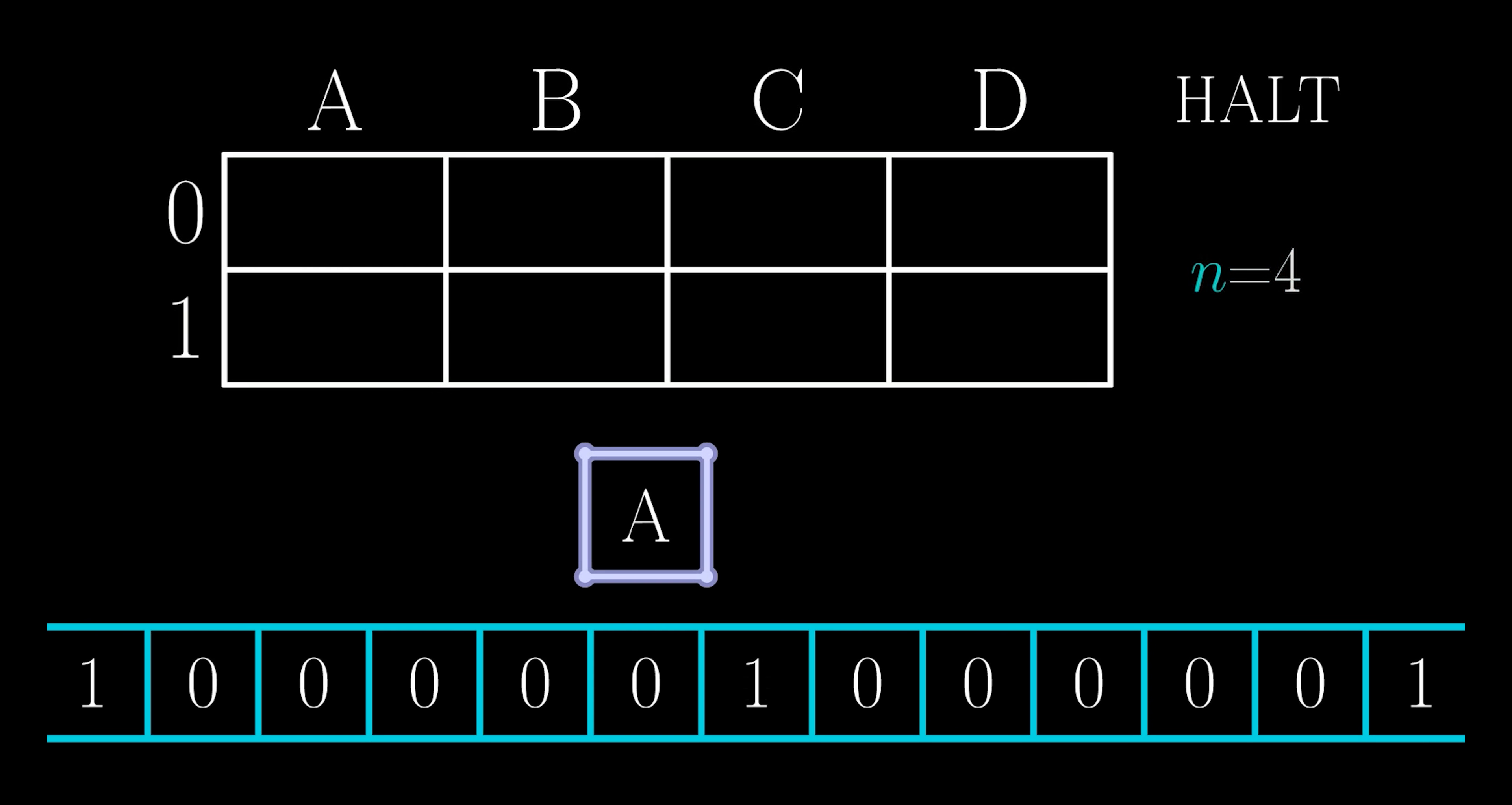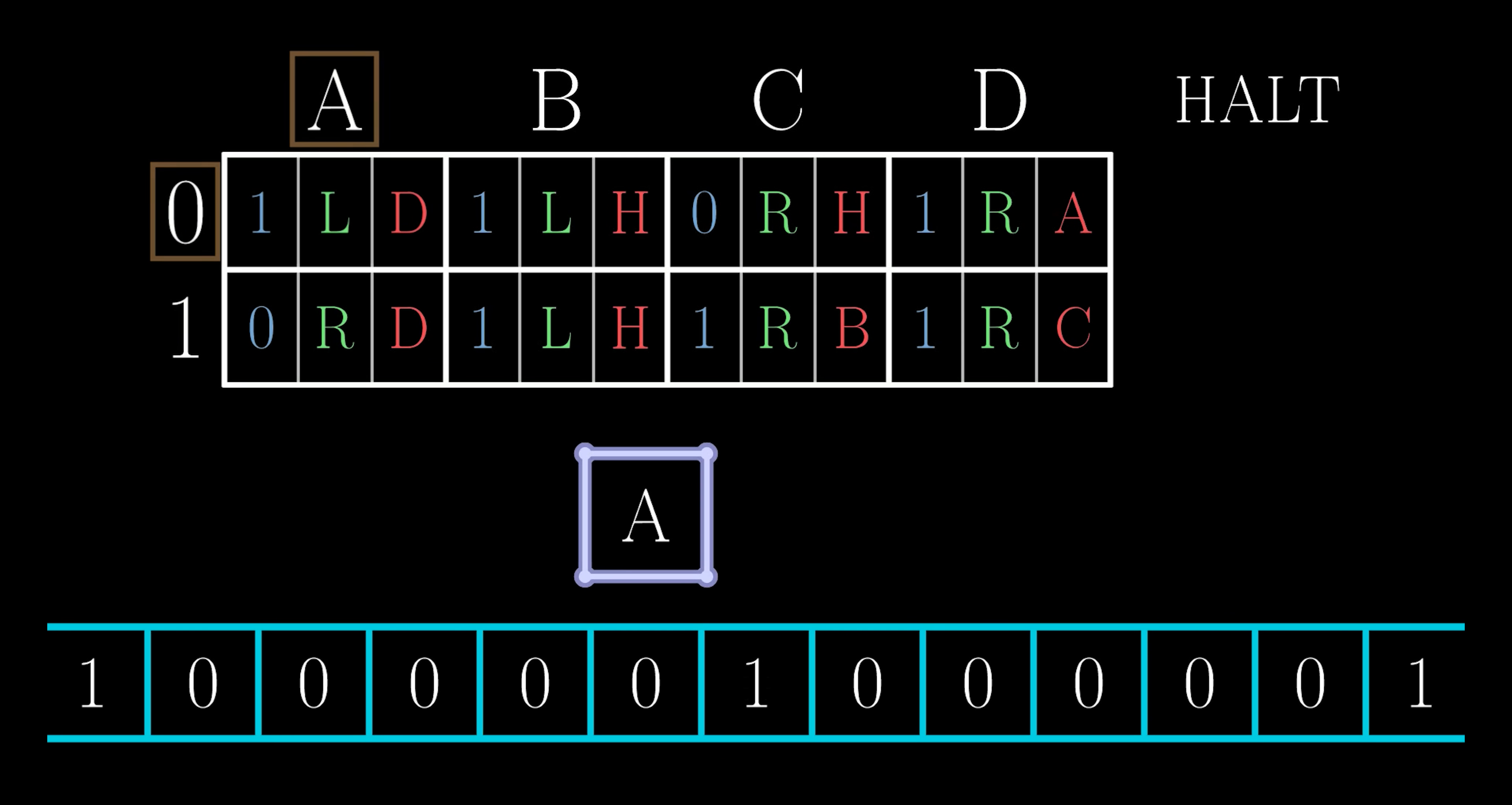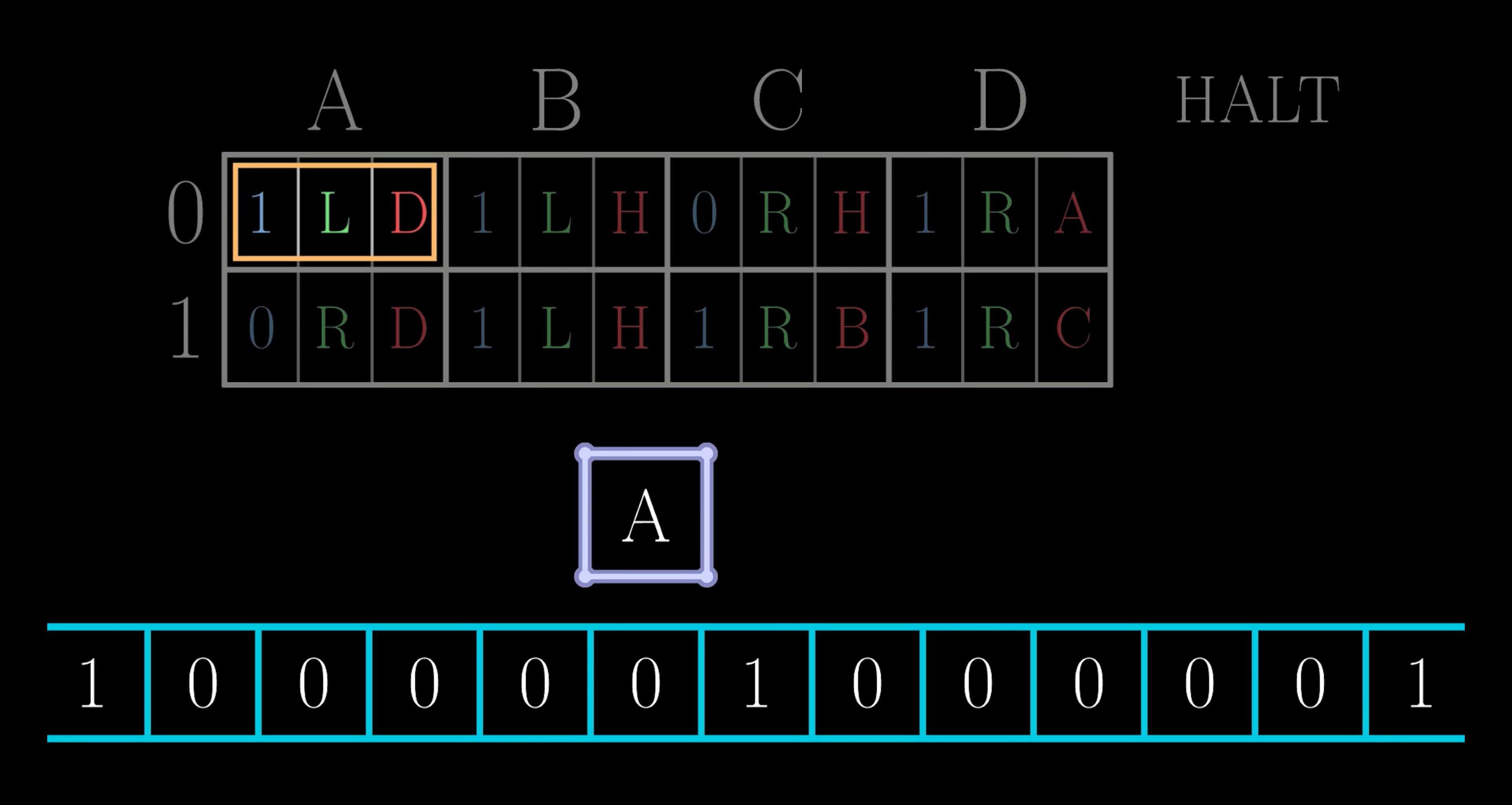Now, for every combination of the state and the value it reads, we have three actions to determine. The value to write, how to shift, and what state to transition into. For example, if the machine is in state A and reads a value of 0, then we would look here to determine the actions. In this case, we would write a value of 1, shift leftward, and change the state to D.